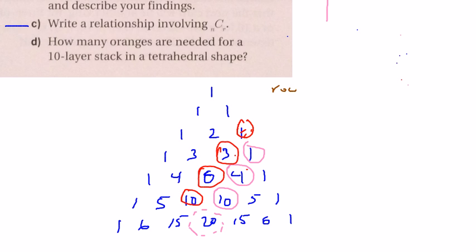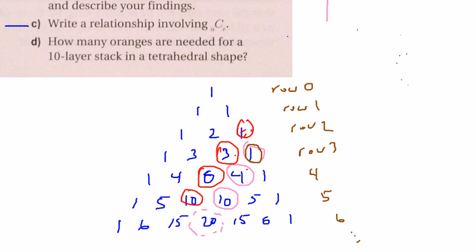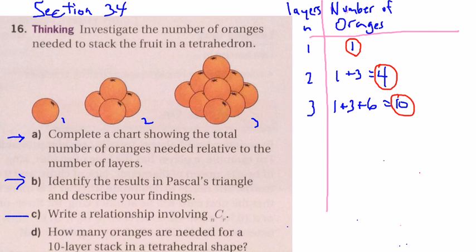Let me label the rows: row zero, row one, row two, row three, four, five, six, and so on. So when I was finding the one-orange tetrahedron, it was 3 choose 3. When n was one, that was 3 choose 3. The four would be 4 choose 3. And this is 5 choose 3, et cetera.